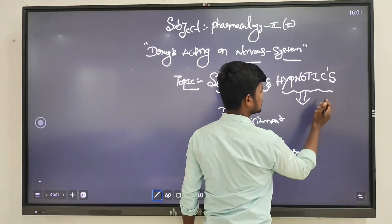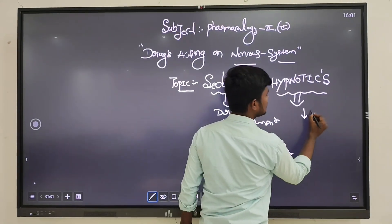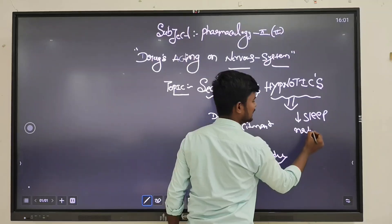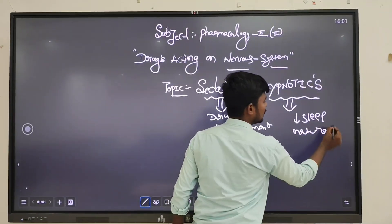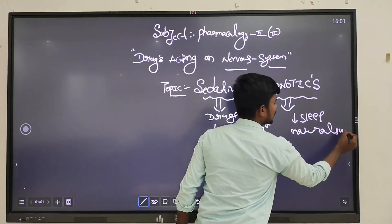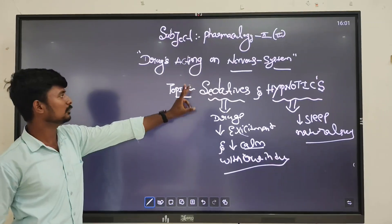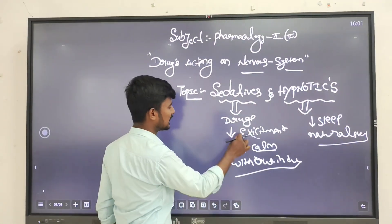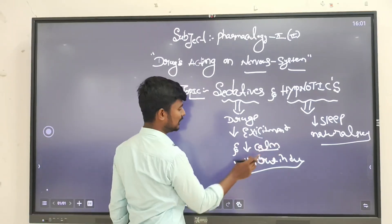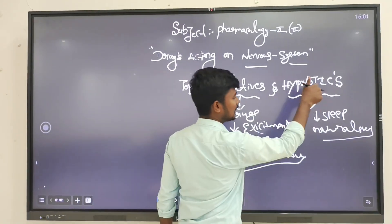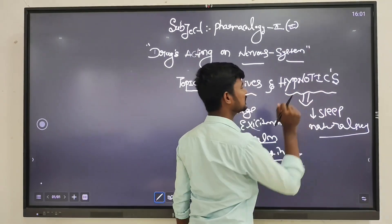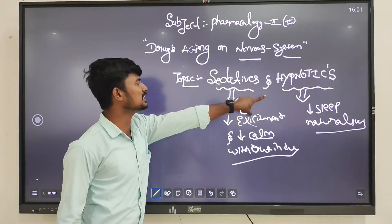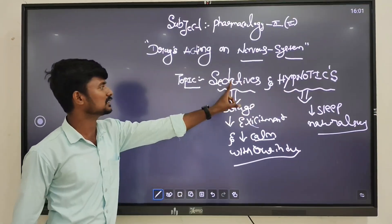What are hypnotics? Hypnotics are drugs which induce sleep similar to natural sleep. That is the definition of sedatives and hypnotics. Drugs which reduce excitement without inducing sleep are sedatives; drugs which induce sleep are called hypnotics. This is the main difference between sedatives and hypnotics.